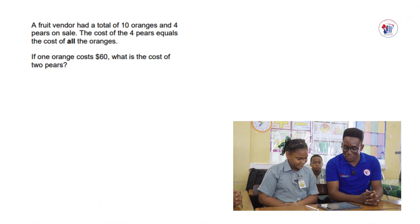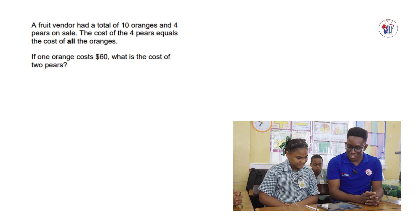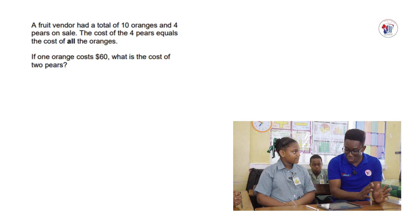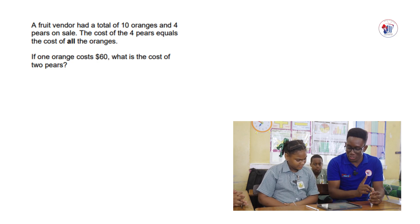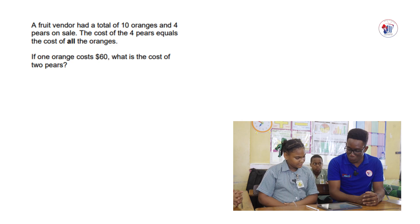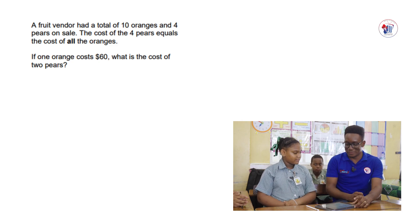We will put that to the test now. You think you beat the mass at Grade 6? Yes. Lovely. So the question says: a fruit vendor had a total of 10 oranges and 4 pears on sale. The cost of the 4 pears equals the cost of all the oranges. If one orange costs $60, what is the cost of two pears? The floor is yours.